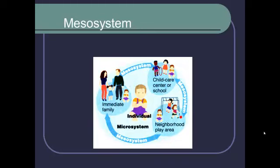In the mesosystem, you see that there are interactions between the separate microsystems. For example, one microsystem is the immediate family, like the parents, and another microsystem is the child's school. It's common for the parents and the teacher at the school to interact with one another, and those interactions can influence the child. The teachers might tell the parents something about the child that impacts the way the parents deal with the child — that would count as a mesosystem, because it's an interaction between microsystems.